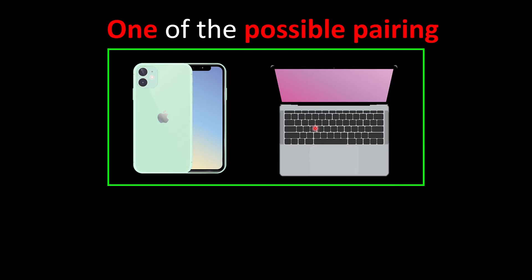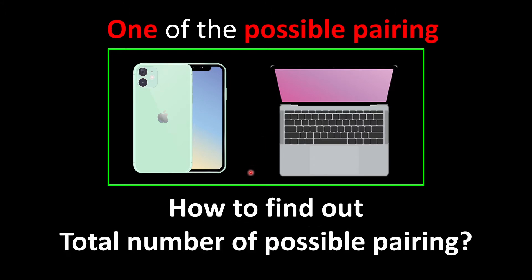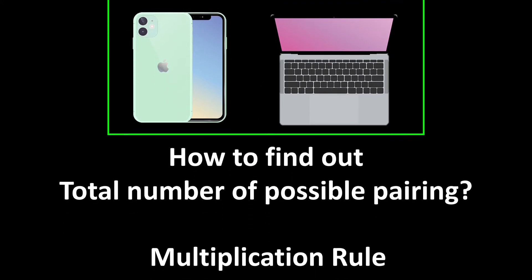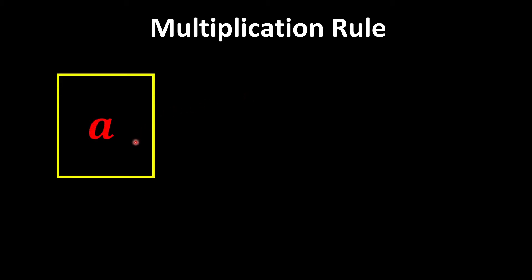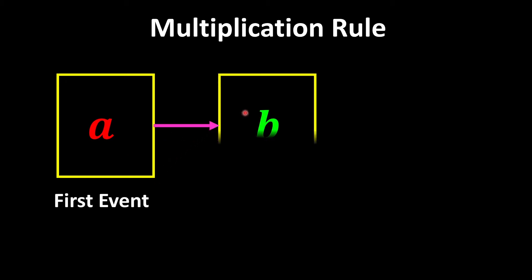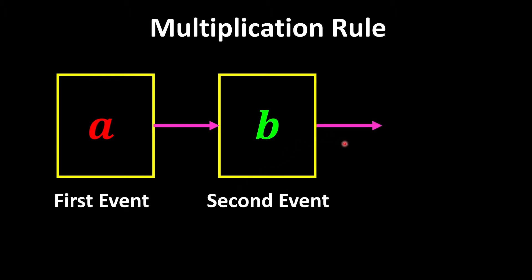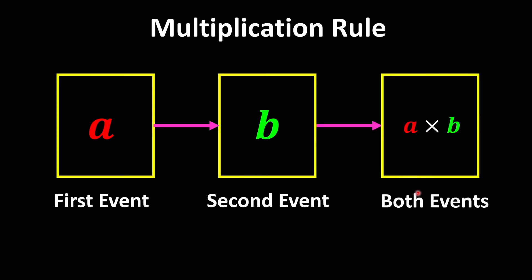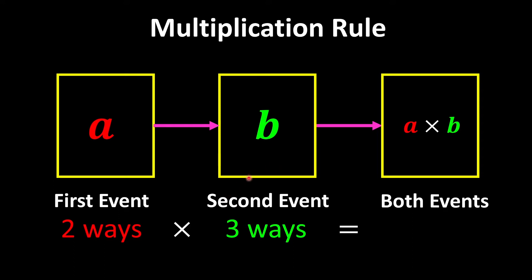This is only one of the possible pairings, because different people will have different preferences. To find the total number of possible pairings, we can use the multiplication rule. It tells us that if there are 'a' number of ways to do something, and after the first event we have 'b' number of ways to finish the second event, then there must be a times b ways to do both events in sequence. The first event is choosing the phone — two ways — and the second event is choosing a device — three ways.